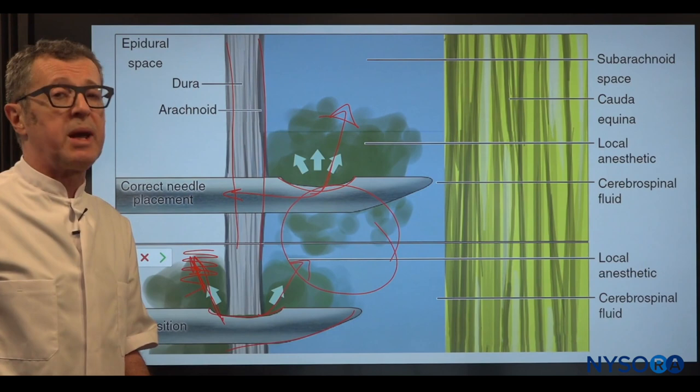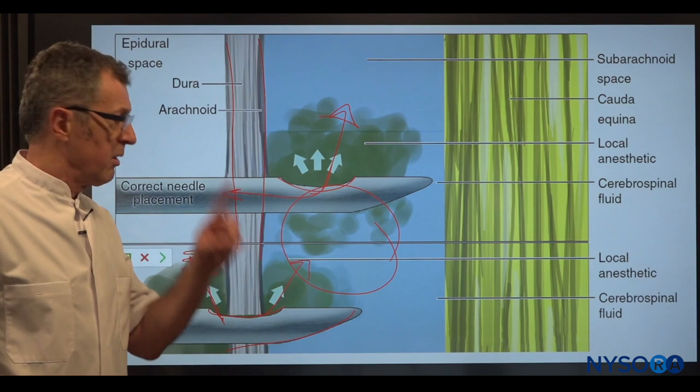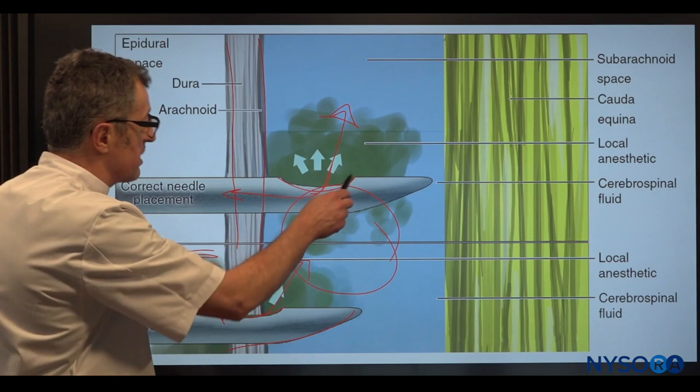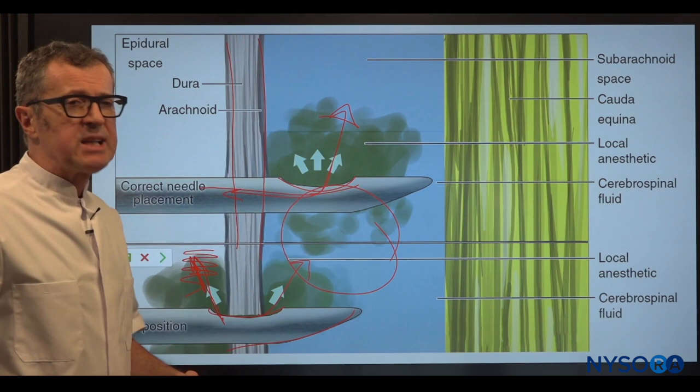The best way to prevent this is to do two things. One, always rotate 360 degrees so that you get the CSF flow throughout that rotation. Two, always aspirate throughout the aspiration process.